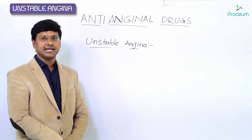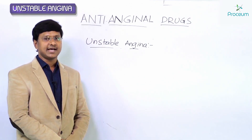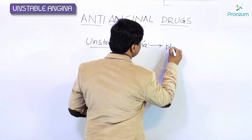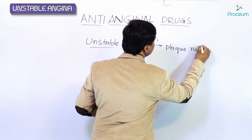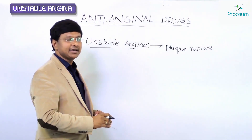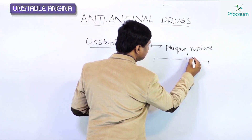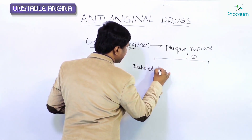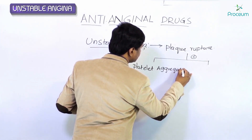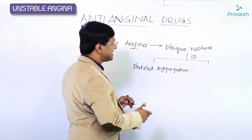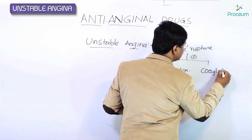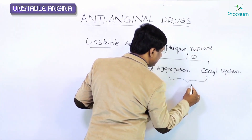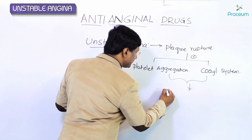Let me discuss unstable angina. The basic pathogenesis is plaque rupture. Because of this plaque rupture, two events get stimulated: the first is platelet aggregation, and the second is the activation of the coagulation system. Both of these will cause occlusion of the coronary artery.